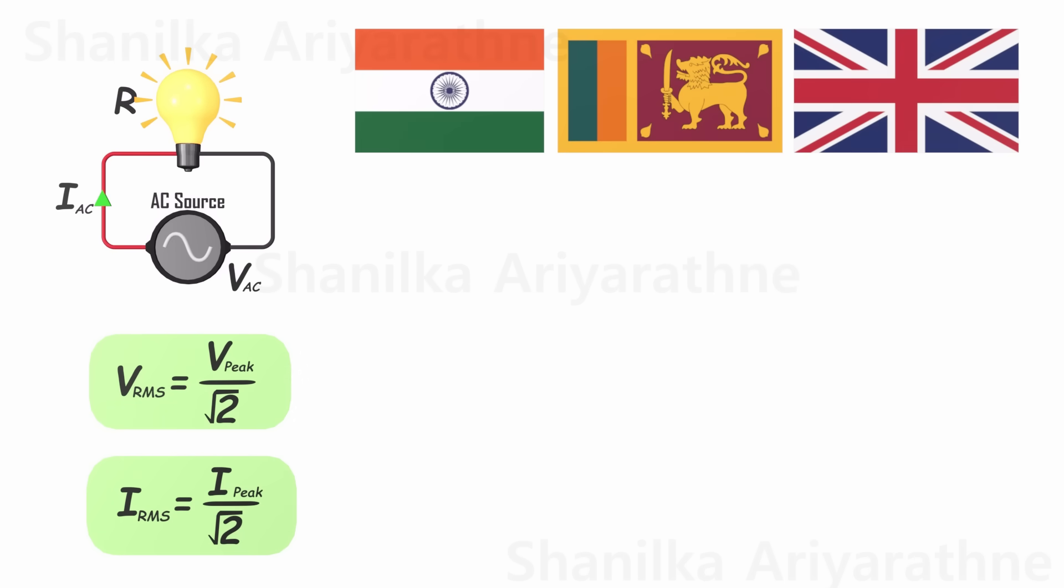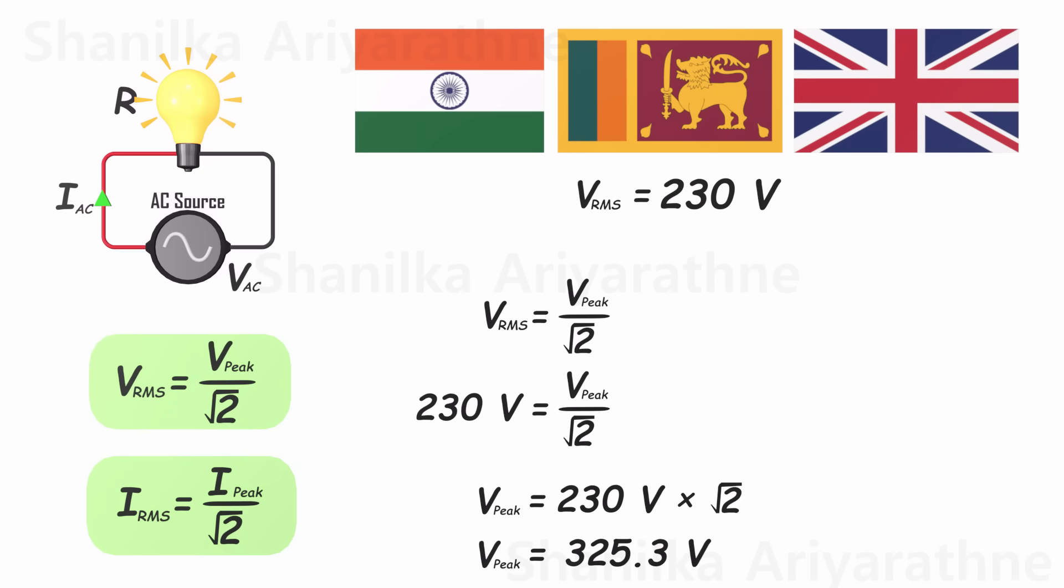Alternatively, if your domestic voltage is 230 volts RMS, the corresponding peak voltage can be calculated using the same equation, resulting in an approximate value of 325.3 volts.